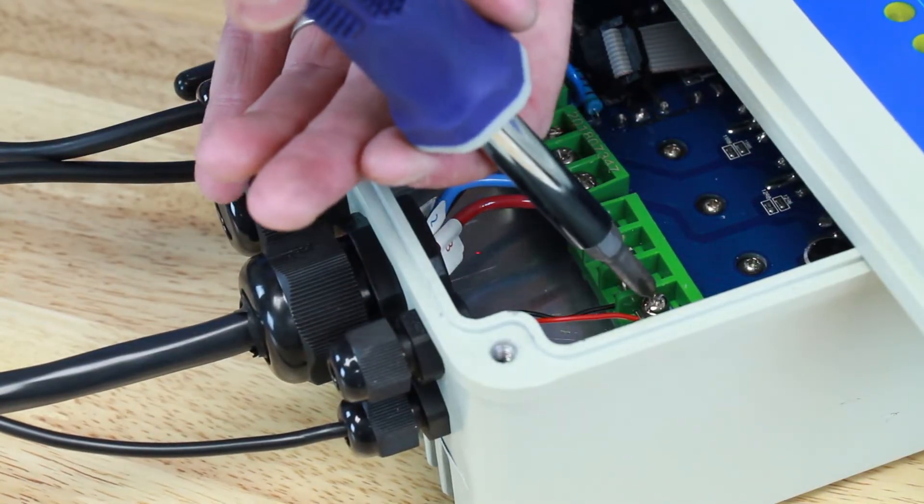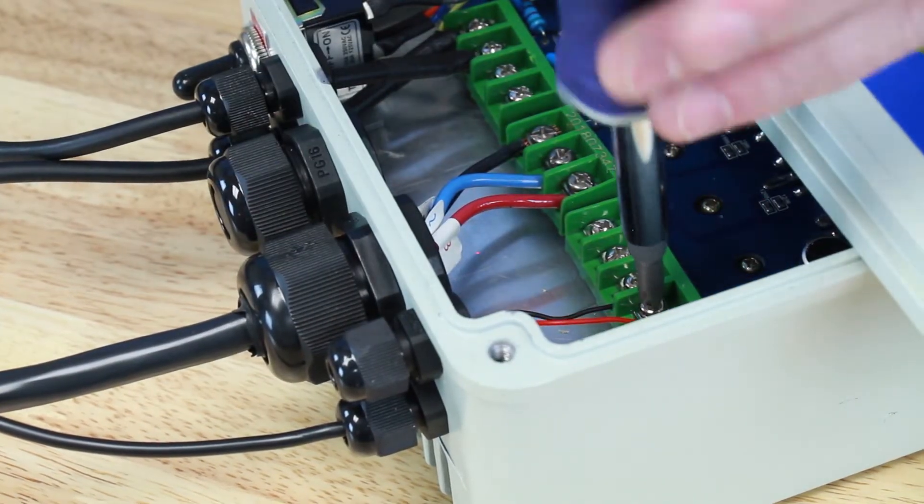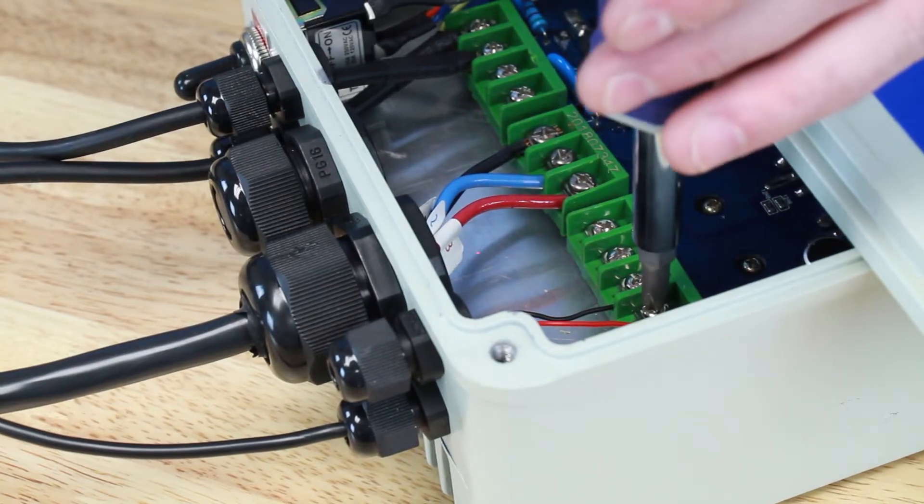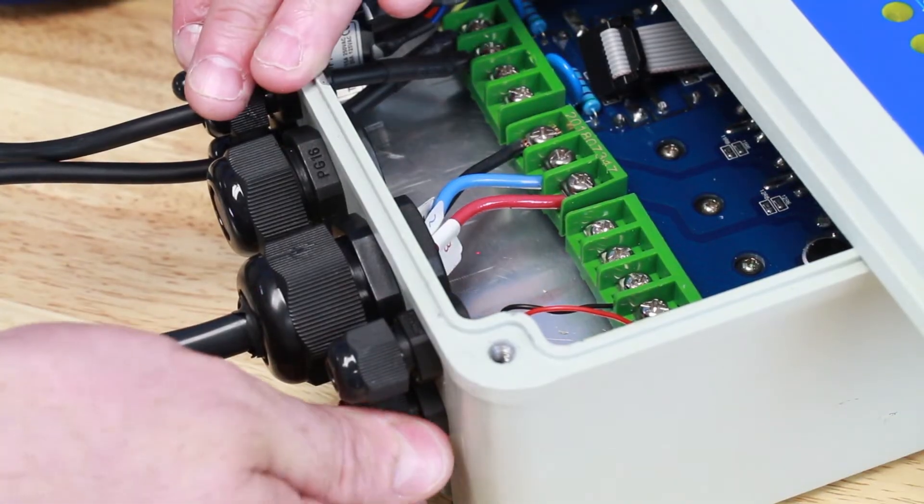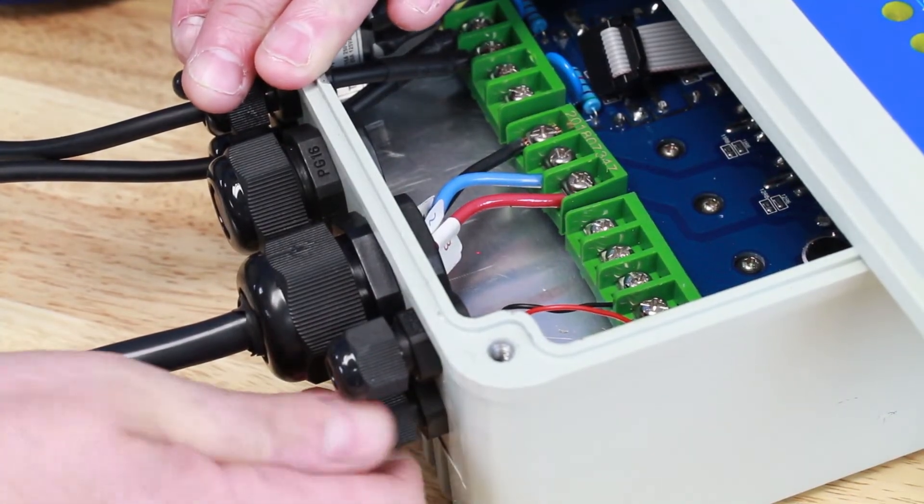Check these connections, both of them in, and they're good. Tighten down the grommet so we don't accidentally pull out those wires.